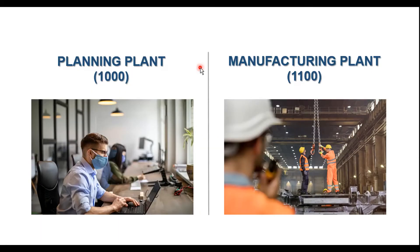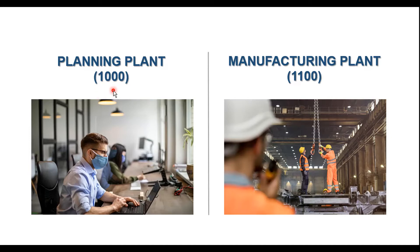In this slide you can see we have two plants: 1000 is the planning plant and 1100 is the manufacturing plant. These two plants are under the same company code, but the planning and creation of process orders or production orders is completely managed by the planning plant, which is 1000.